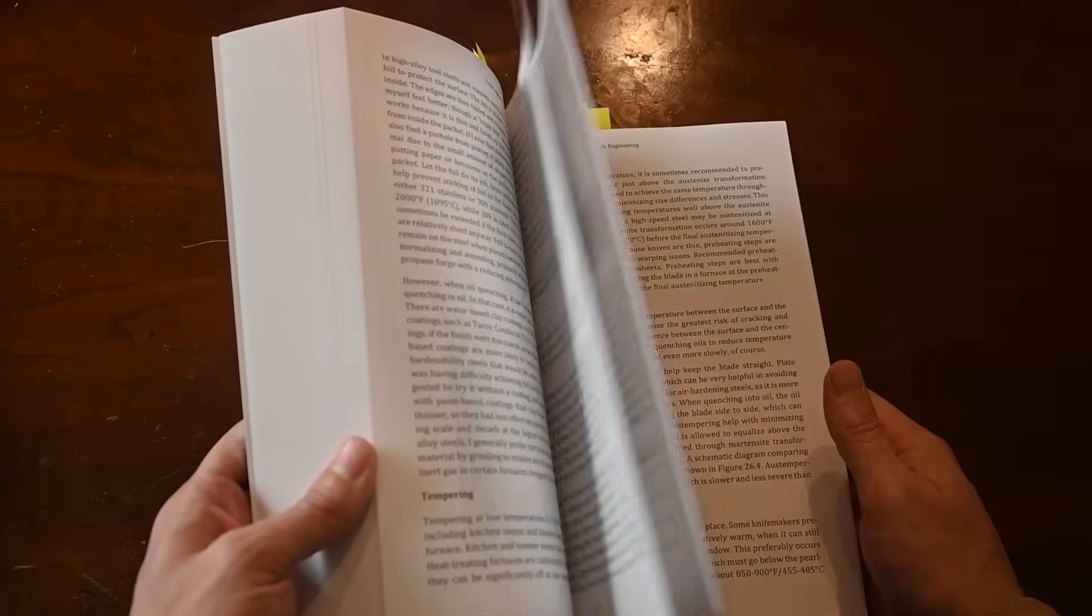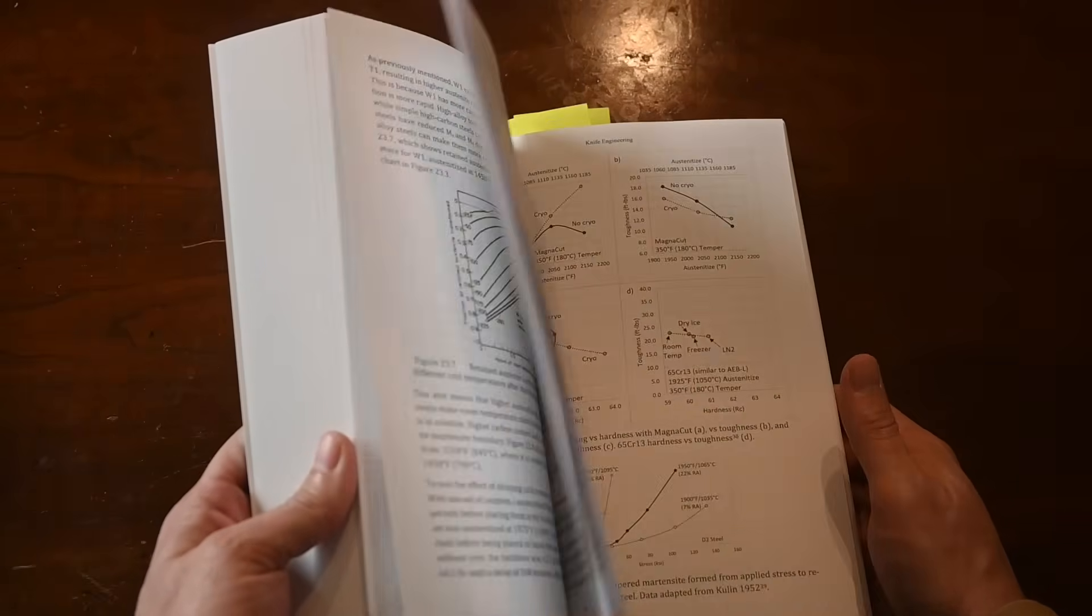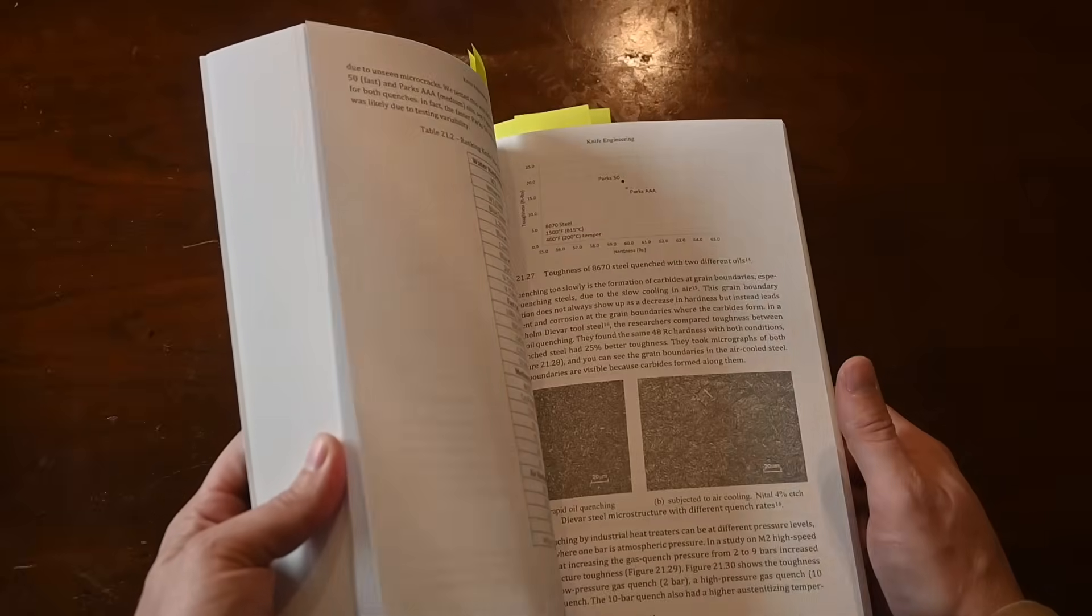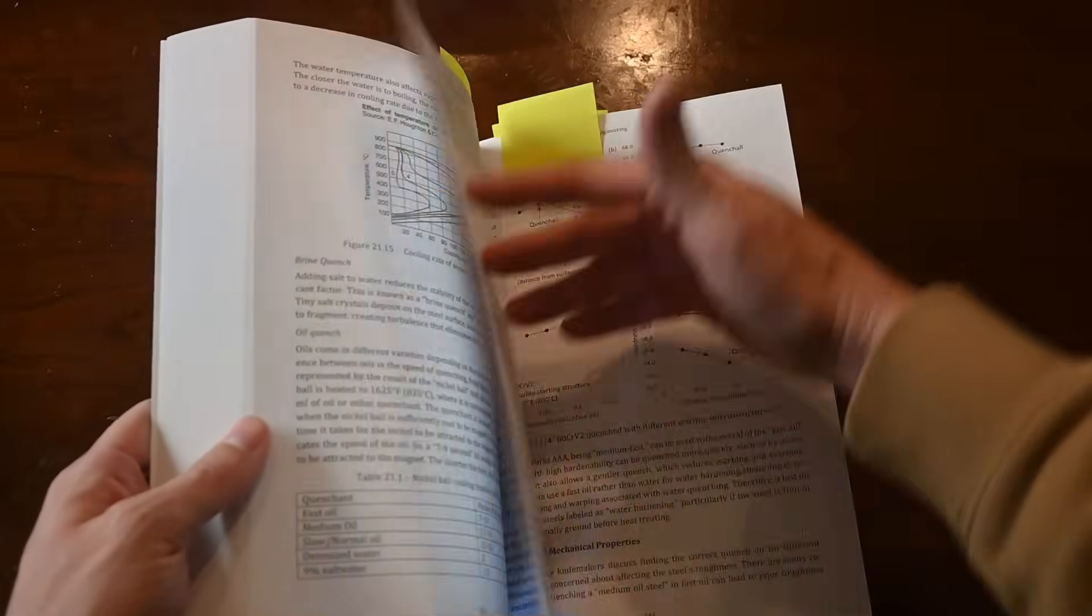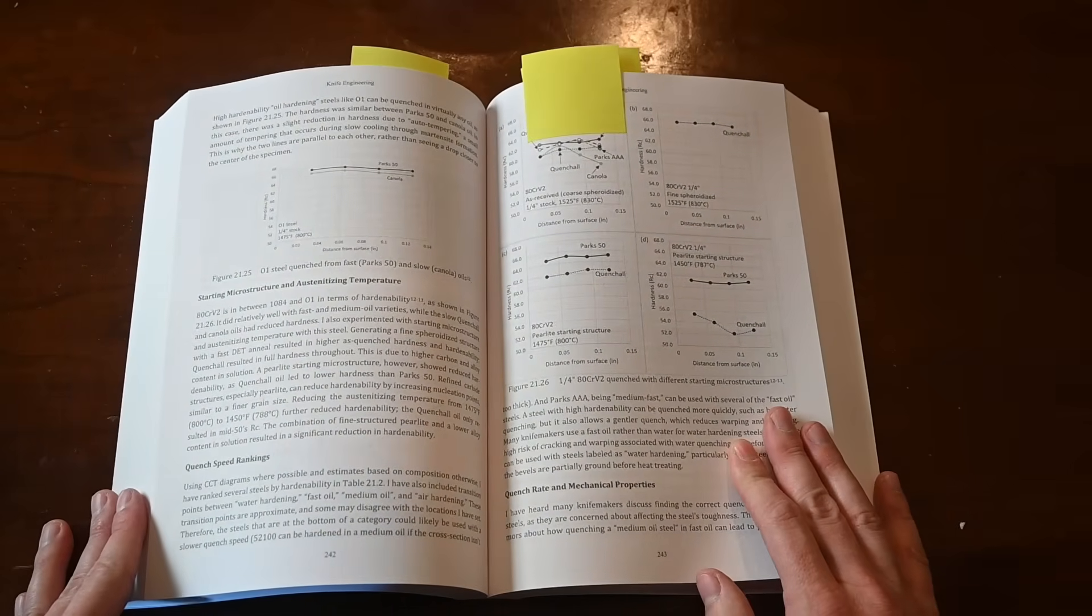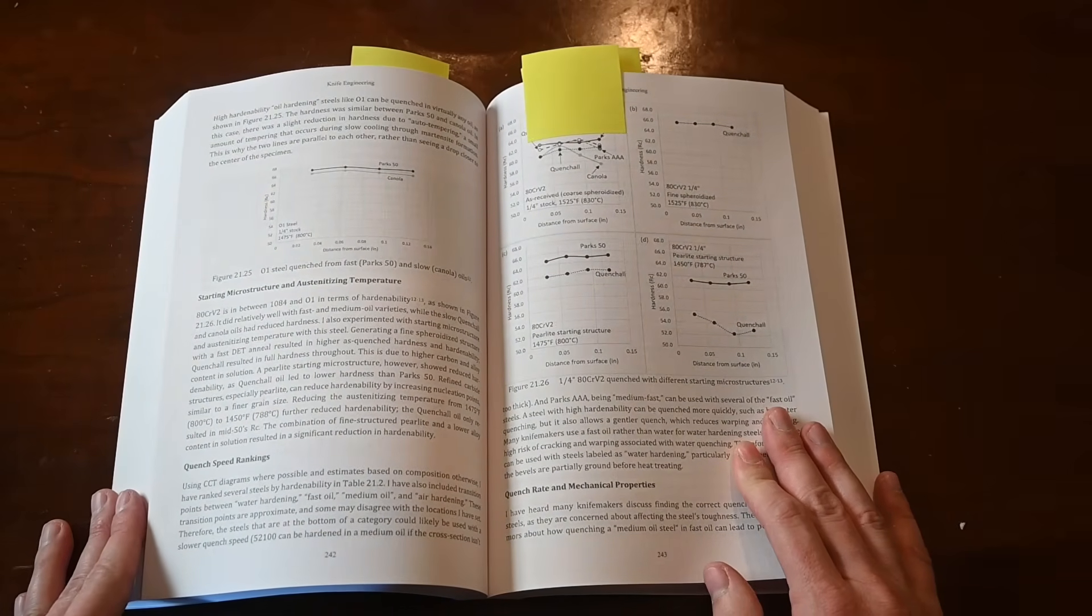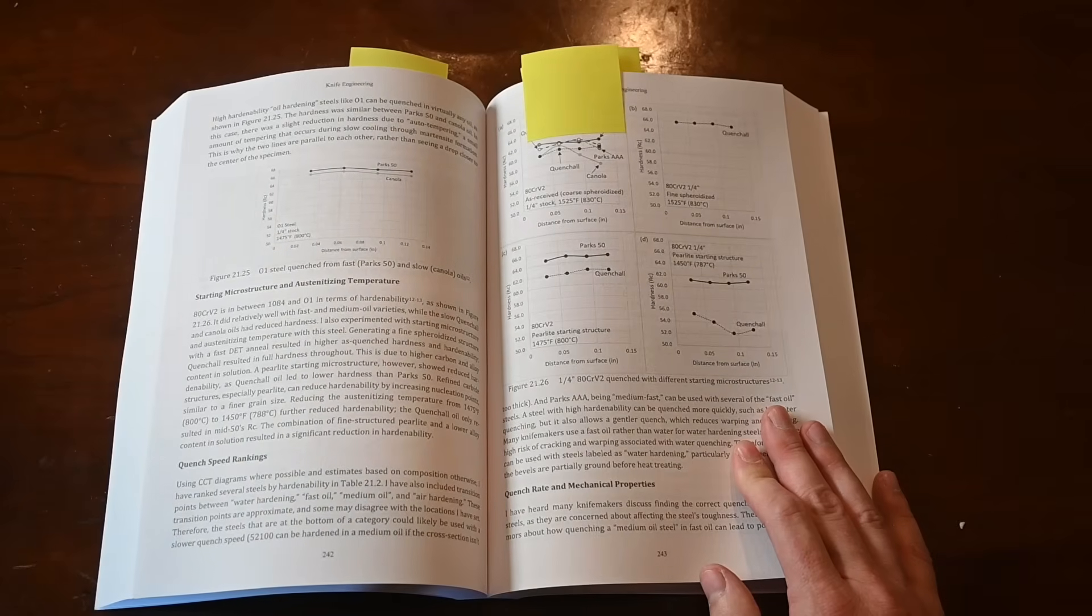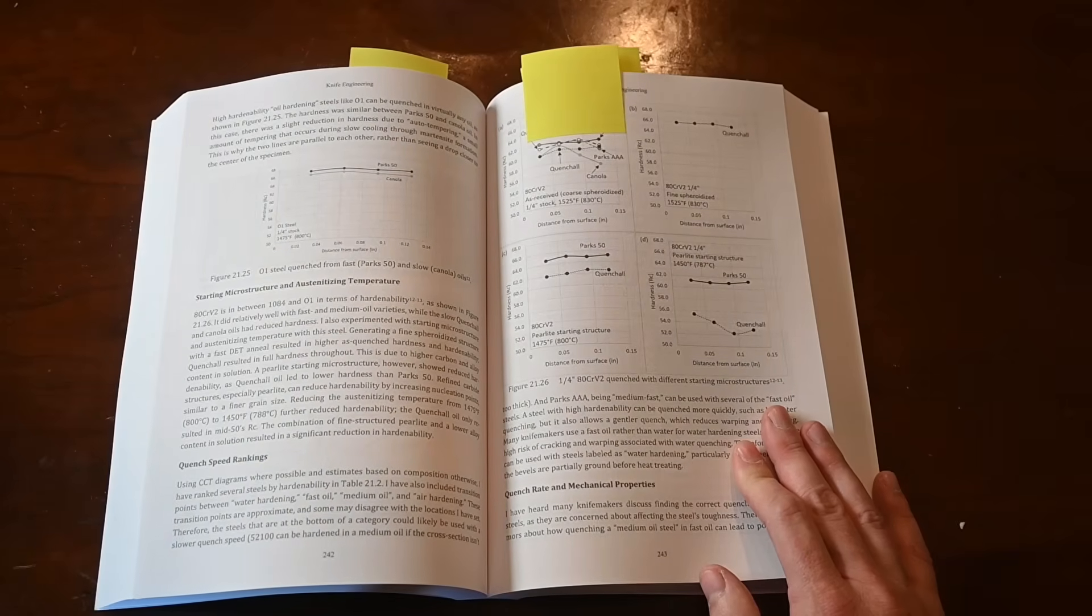As other examples of things that were added to the book, there's a bunch of experiments—I'm not going to show them all, obviously you'll have to buy the book to see all of that. But for example, here in the quenching section, I did a really big oil quenching study since the first edition because I did not have experience with different cross-section thicknesses on different steels with different commercially available oils that knife makers are using.